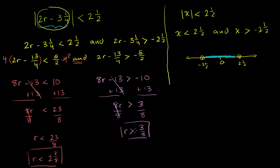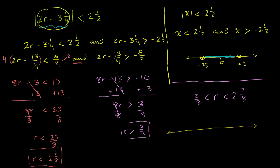Our two conditions: r has to be less than 2 and 7 eighths, and greater than 3 eighths. We can write it as: 3 eighths is less than r, which is less than 2 and 7 eighths. Plotting on a number line with 0, 1, 2, and 3 marked: 2 and 7 eighths is just under 3, and 3 eighths is just past 0. Everything in between is a valid solution.